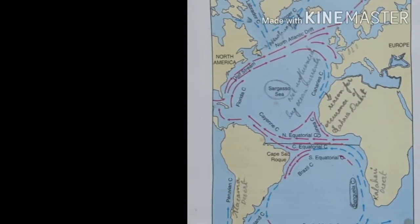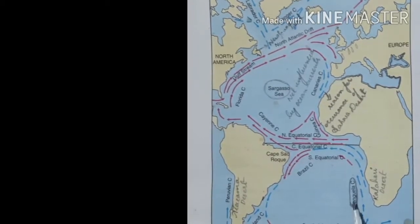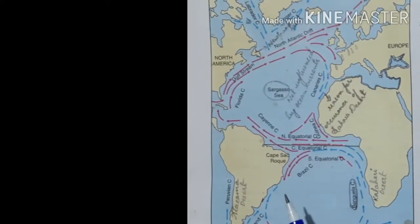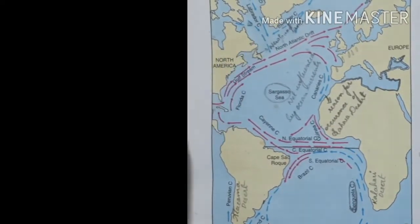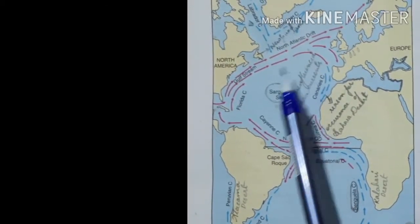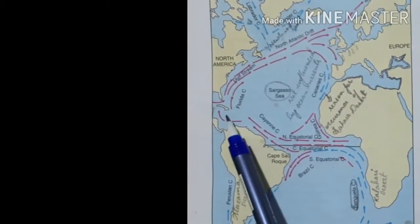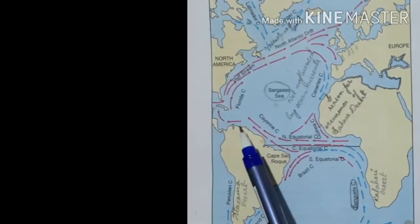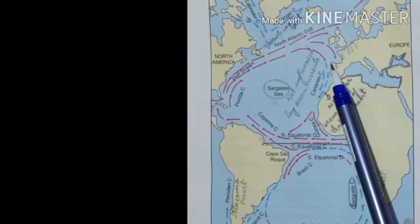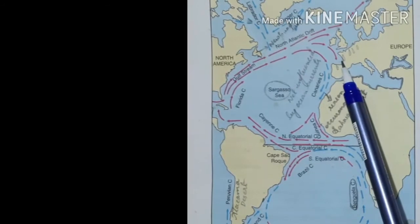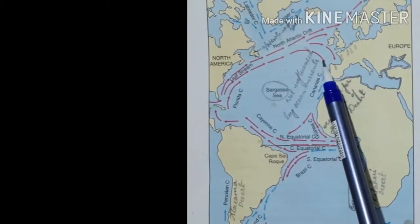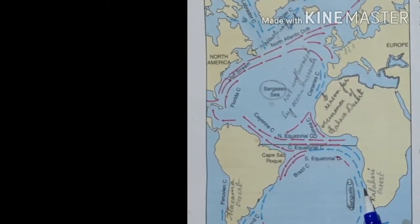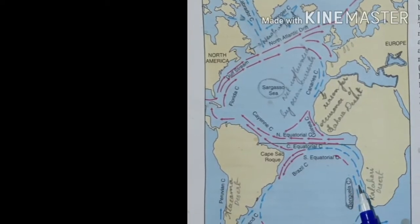The blue arrow marks indicate cold ocean currents coming from the South Pole, and another blue line indicates the cold ocean current coming from the North Pole. The red arrow marks show warm ocean currents starting from the equatorial region. Warm ocean currents increase the temperature of the coastline of the continents. The European region experiences colder conditions in winter, but temperature is increased by the North Atlantic Drift. Cold ocean currents reduce temperature in hot regions, so ocean currents help in maintaining the temperature of coastal regions.